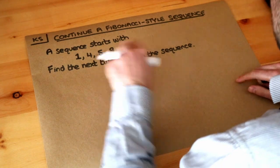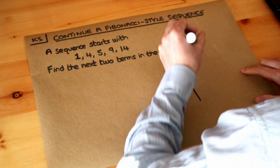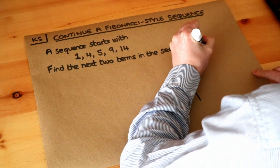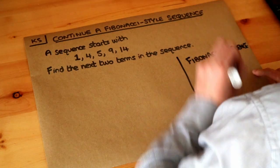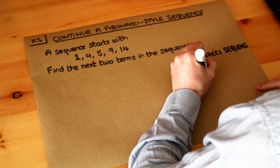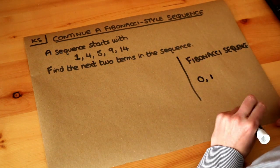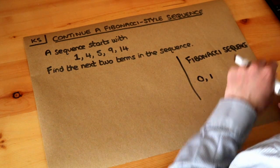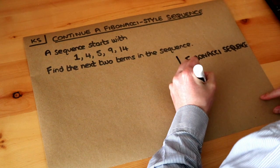Now before I tackle this question, let me describe to you what the Fibonacci sequence is. It's a very famous sequence, and basically the Fibonacci sequence starts with 0 and 1. And for every term after the first two, you just add the last two terms.